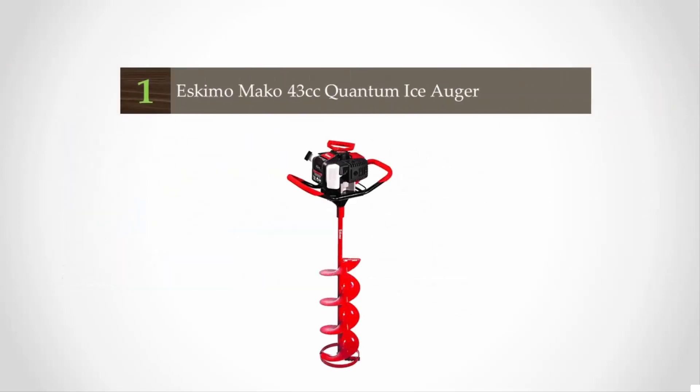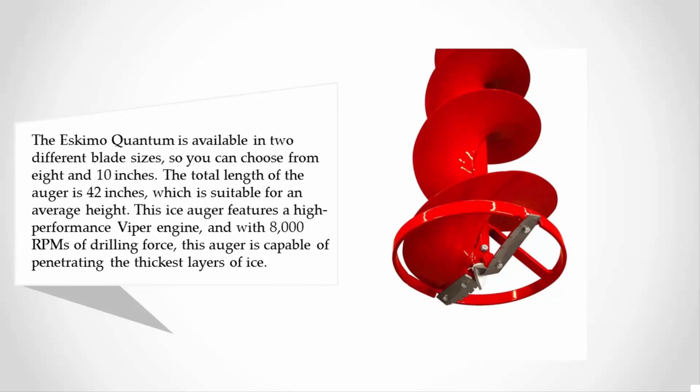Coming in at number one on our list, the Eskimo Quantum is available in two different blade sizes, so you can choose from 8 and 10 inches. The total length of the auger is 42 inches, which is suitable for average height. This ice auger features a high-performance Viper engine, and with 8,000 RPMs of drilling force, this auger is capable of penetrating the thickest layers of ice.